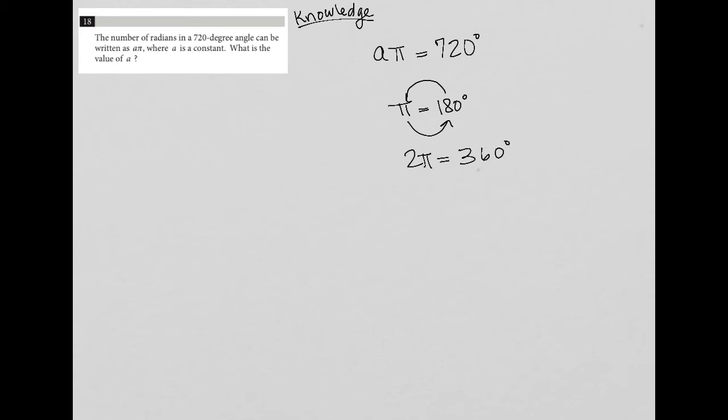And then hopefully you see that 360 is half of 720, which means if I multiply this whole thing by two, I'd get that four pi is equal to 720 degrees.